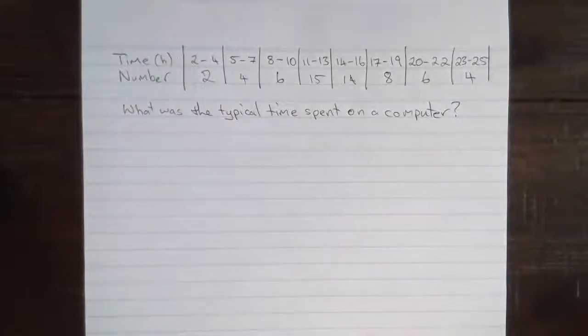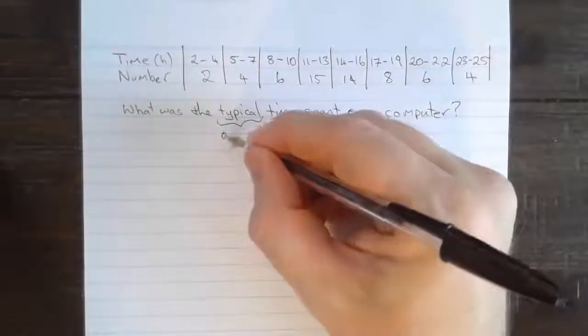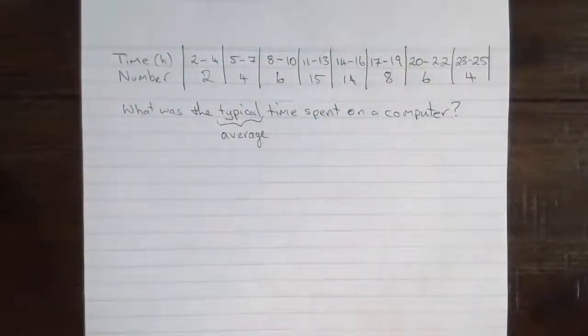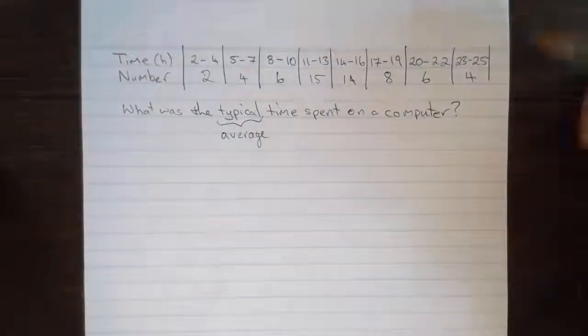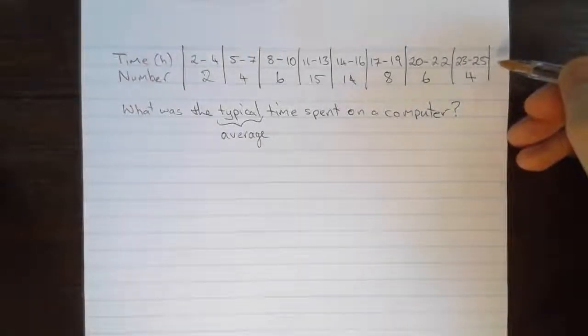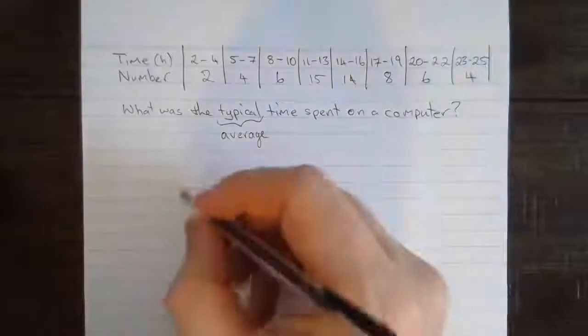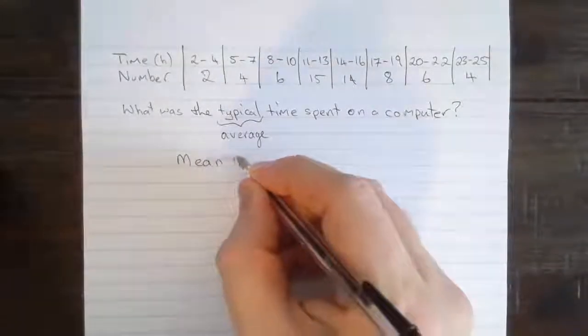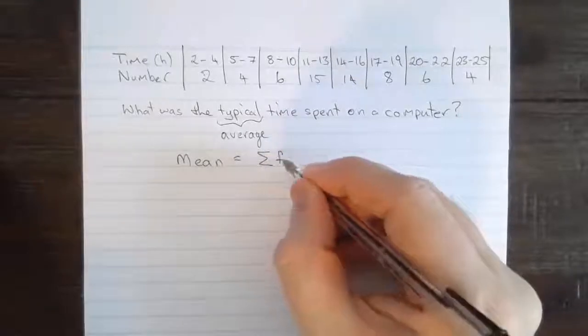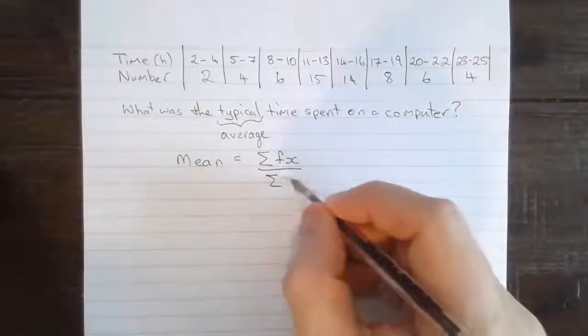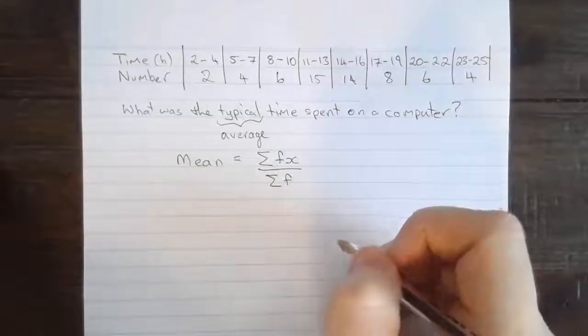So my plan of attack for this problem is to note that the word typical is used, and I'm going to interpret that as meaning average or mean. So I'm going to try to figure out what is the average time spent by these students on their computer in each week. Noting that we've got grouped data, that means we're going to have to figure out the class midpoints in order to apply the formula for the mean of that data. Looking back in the textbook, I can see that the mean is equal to the sum of the frequency multiplied by the centre point of the class or the group divided by the sum of all the frequencies or the number of students or people that we're talking about.